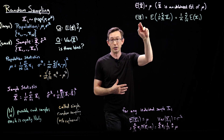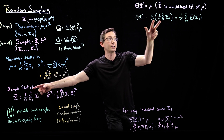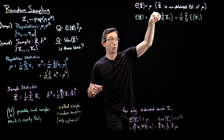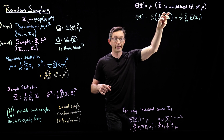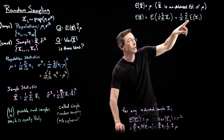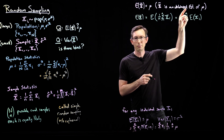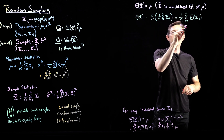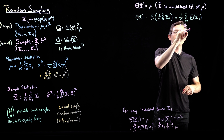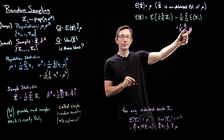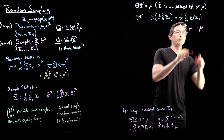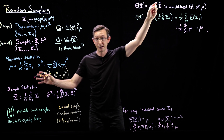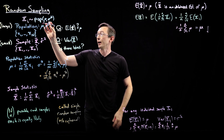Going back to what we're trying to show: the expectation of X-bar equals mu. We plug X-bar into the expectation — it's the sum of random variables X_i times (1/n). The constant pops out, the expectation of a sum is the sum of expectations, and each expectation value is mu. So we have (1/n) times the sum from i equals 1 to n of mu, which is (1/n) times n times mu, which equals mu. The expected value of X-bar equals mu — X-bar is an unbiased estimate of the population mean.